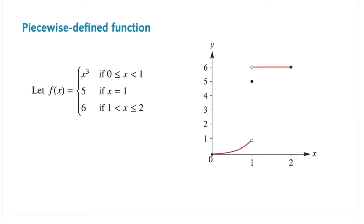Previously, we looked at piecewise defined functions. We said that by restricting the domain, we get different parts of the graph. In other words, we consider only some x values, and as a result, we only sketch a portion or a small piece of the entire graph. So for example, the first function is a cubic function. Since we restrict the domain to be greater than or equal to 0 and less than 1, as you can see the domain is listed here, we only sketch this small piece of the entire cubic function.